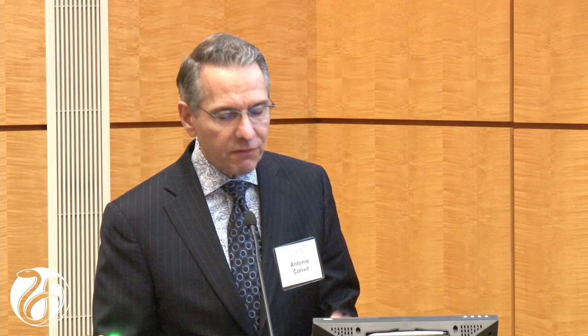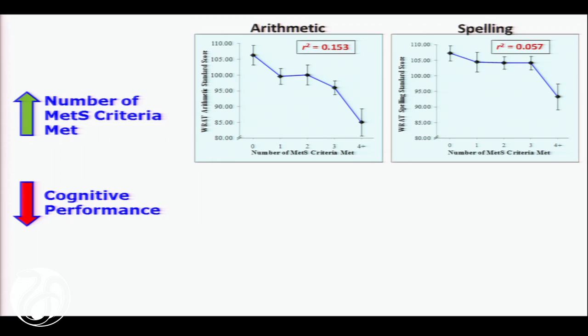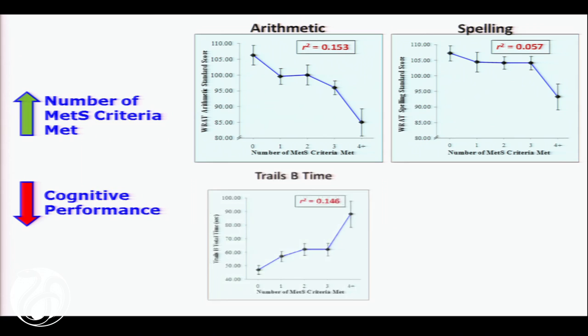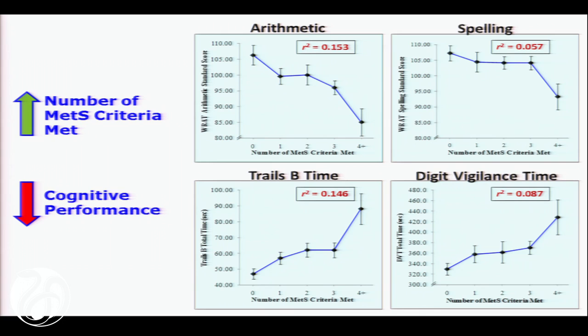When we looked at the number of criteria of metabolic syndrome that the kids met, we found decreasing performance. Kids on the left of each graph with zero of the five criteria were performing best. Kids who had four or more of the criteria were performing the worst. The bottom two panels are time tasks, so the higher the number, the worse the performance.